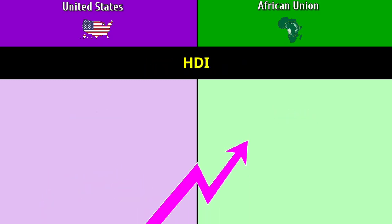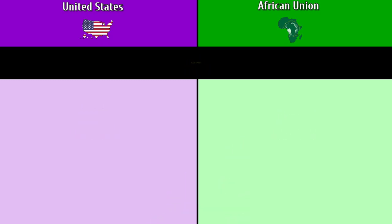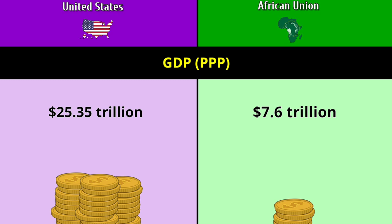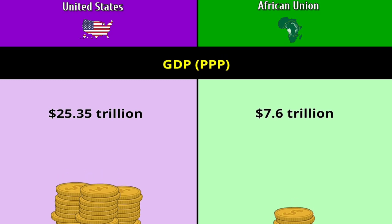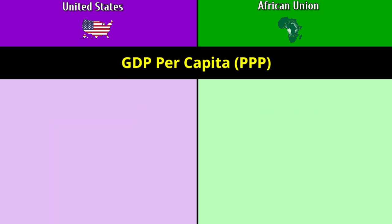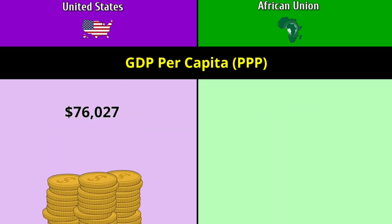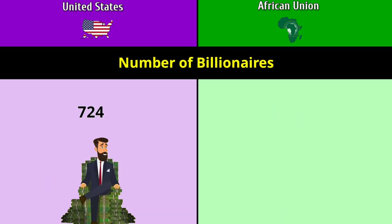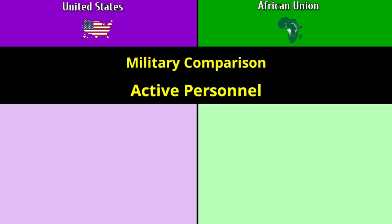HDI: 0.921 versus 0.577. GDP for PPP: 25.35 trillion dollars versus 7.6 trillion dollars. GDP per capita for PPP: seventy-six thousand and twenty-seven dollars versus five thousand seven hundred and thirty-three dollars. Number of billionaires: 724 versus 18.